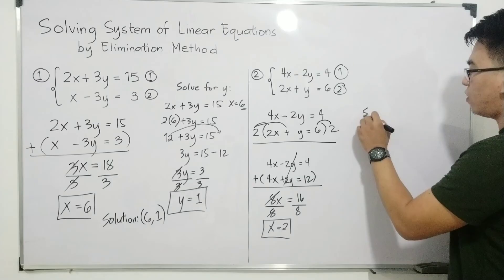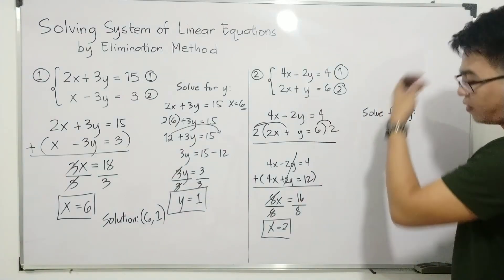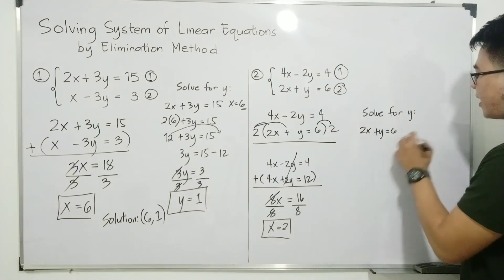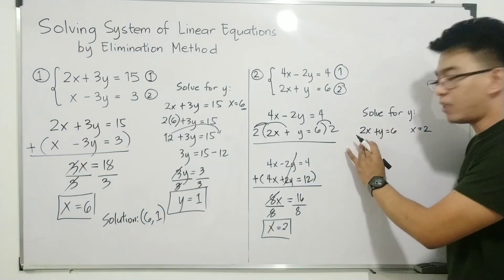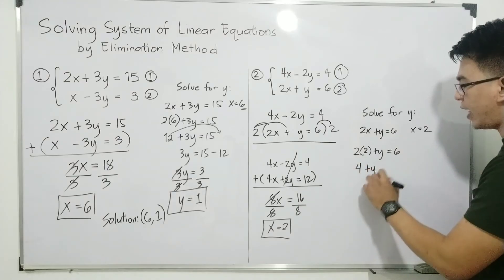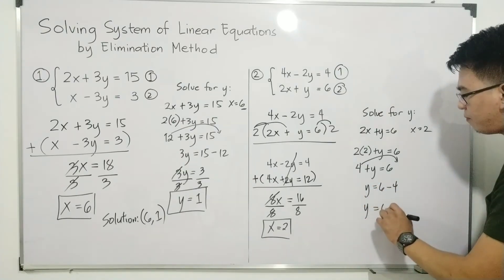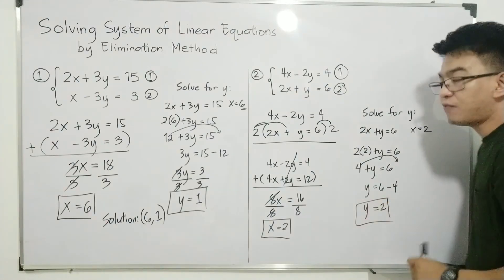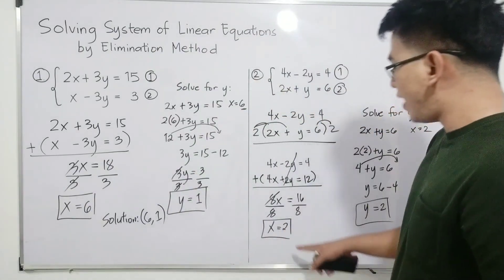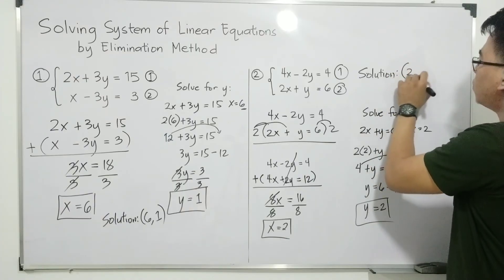Now let's solve for y. I will use the second equation, 2x plus y equals 6, because y is already isolated with a coefficient of 1. Substituting x equals 2, we get 2 times 2 plus y equals 6, which simplifies to 4 plus y equals 6. Transposing gives y equals 6 minus 4, so y equals 2. Since x equals 2 and y equals 2, the solution of the second system is (2, 2).